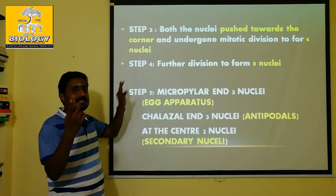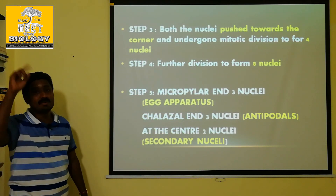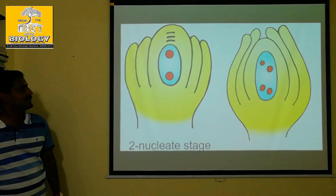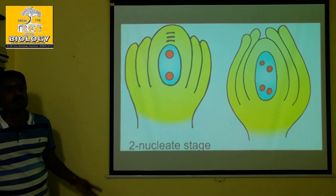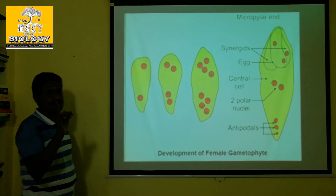Now the fourth part of the 8-nucleate stage is in the 3rd step. In CBC books, they can show you the 8-nucleate arrangement.